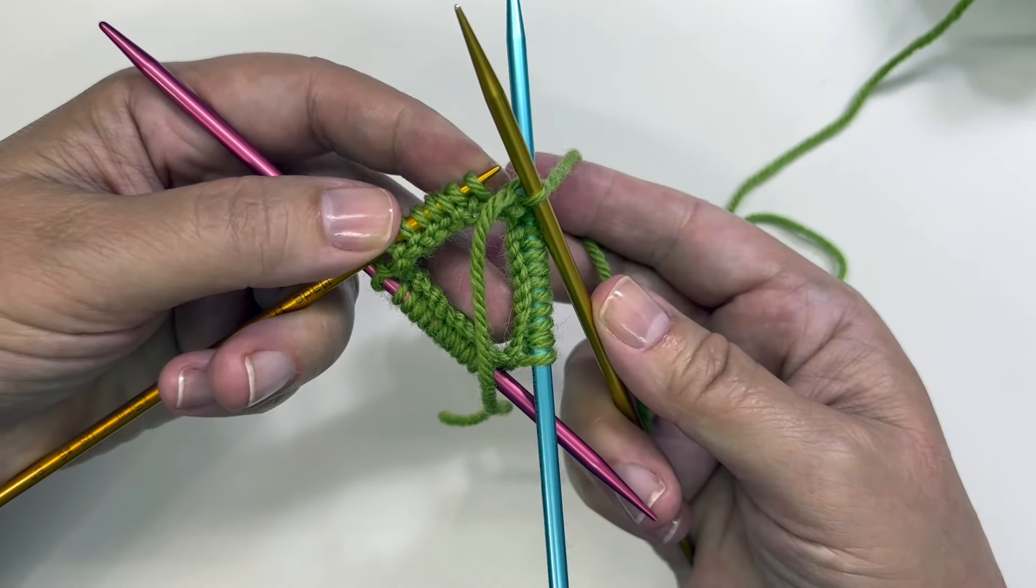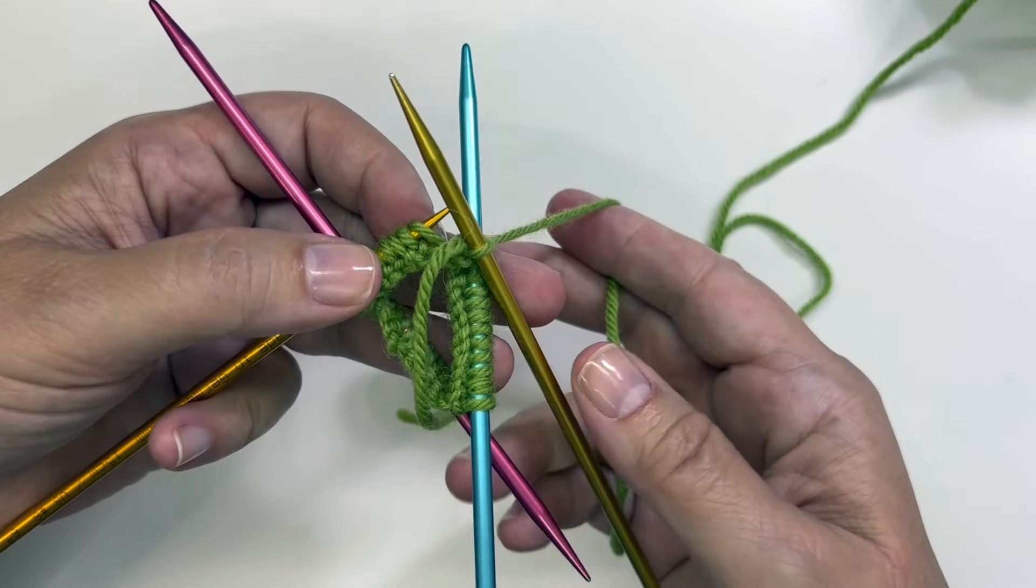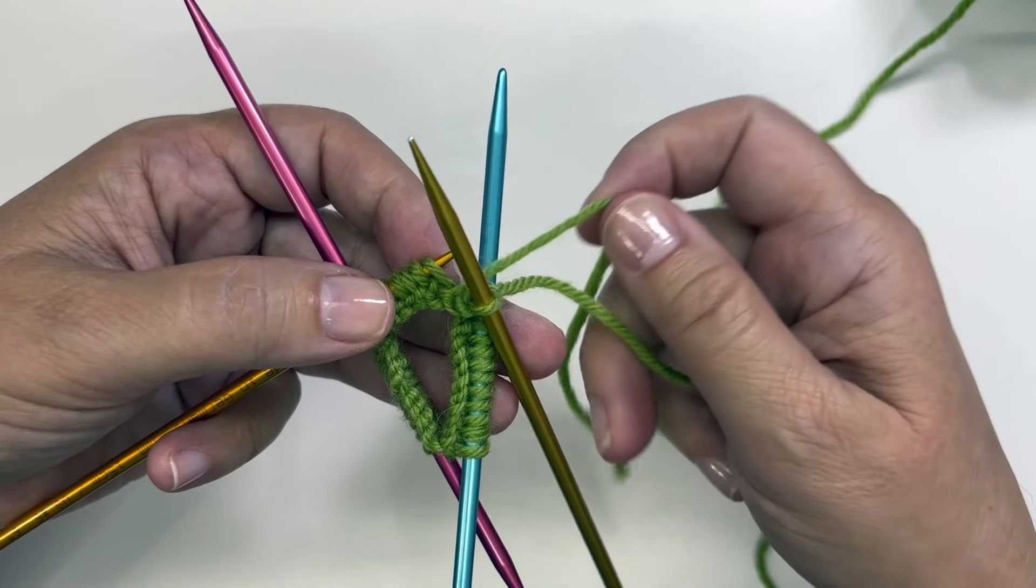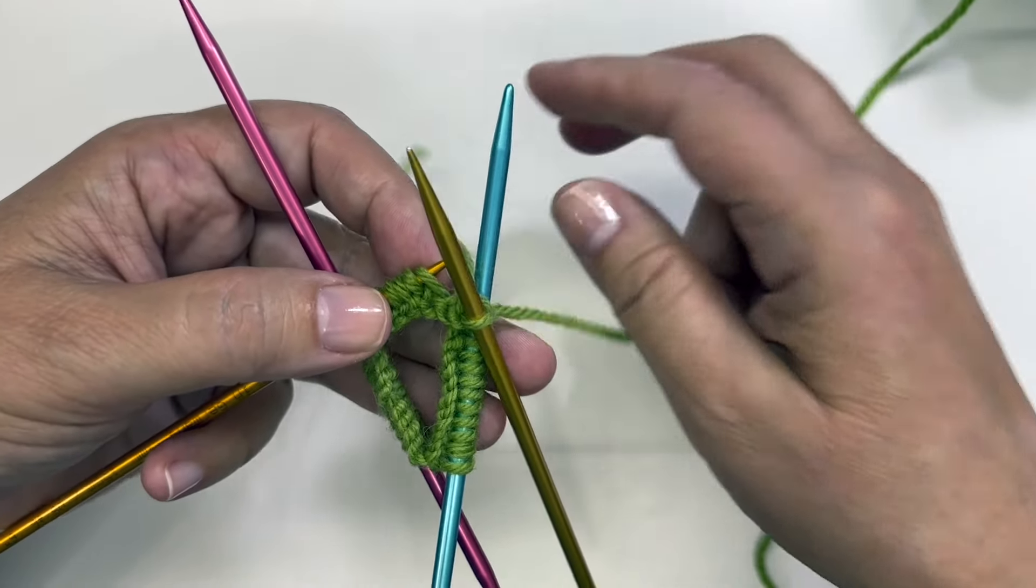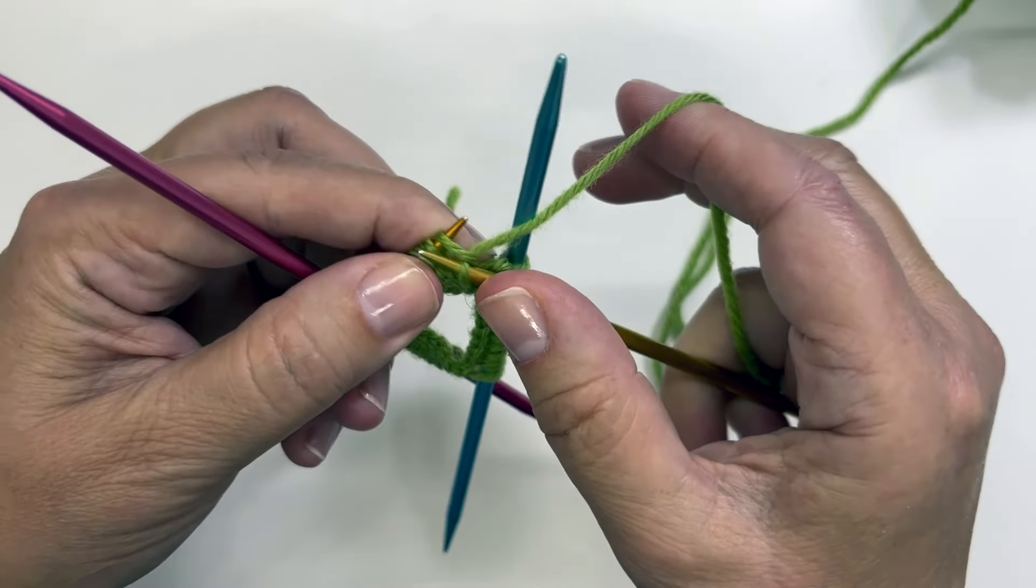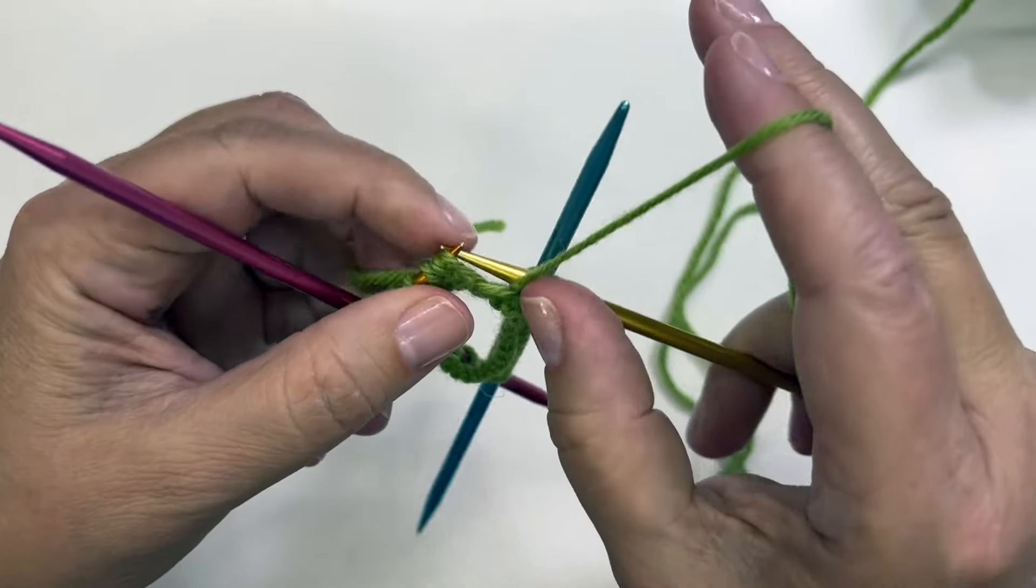You see when I do that everything just kind of automatically lines up the way that it should, so you don't have to worry too much. I'm going to tuck that tail out of the way here. I'm going to knit my next stitch and then I'm going to purl two stitches.